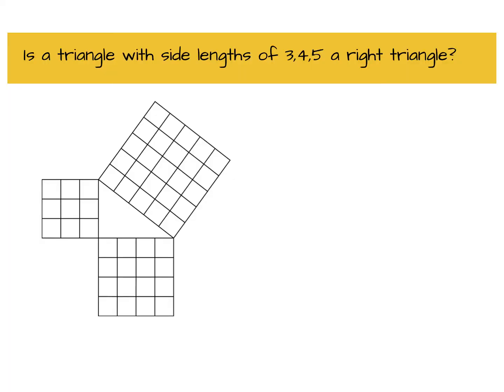The question asks, is a triangle with side lengths of 3, 4, and 5 a right triangle? The diagram that's here shows us side lengths with 3, 4, and 5.